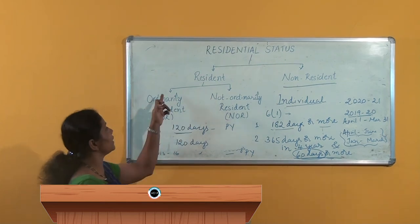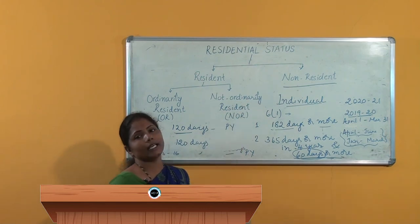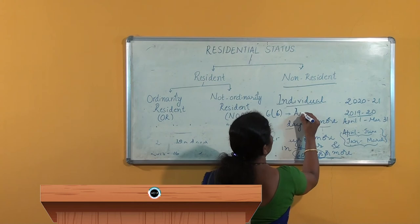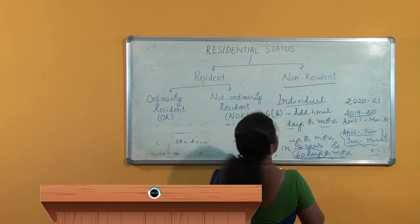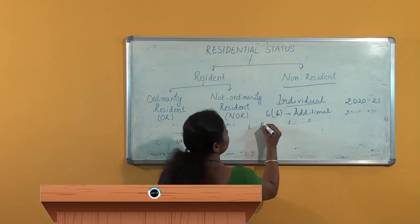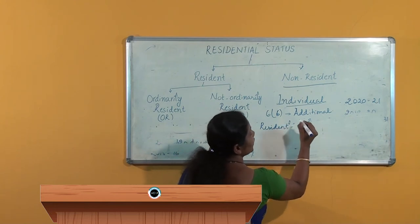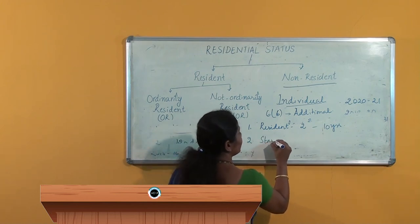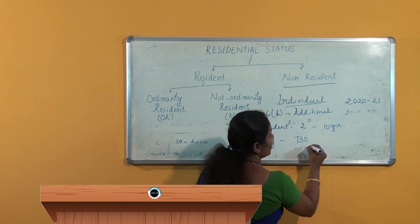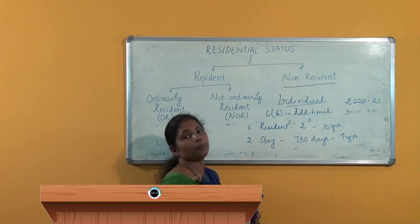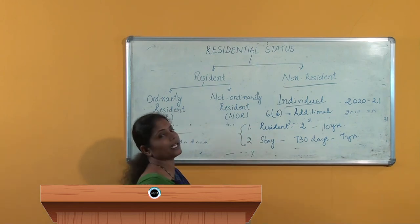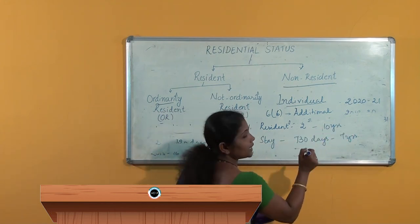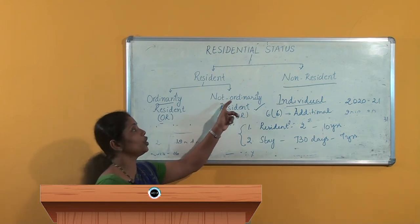Next, if he is a resident of India, we further verify whether he is ordinarily resident or not ordinarily resident. To verify this, Section 6 subsection 6 gives two additional conditions. First, he must have been a resident of India for at least 2 years out of the 10 years preceding the previous year. Second, he must have stayed in India for 730 days or more in the 7 years preceding the previous year. If he fulfills both additional conditions, he becomes ordinarily resident; if he fails to fulfill even one, his status becomes resident but not ordinarily resident.